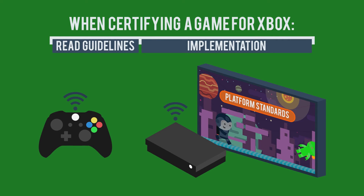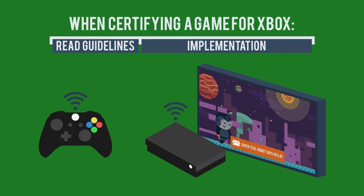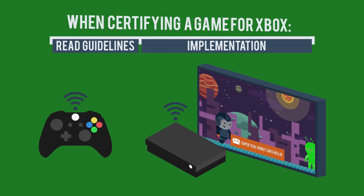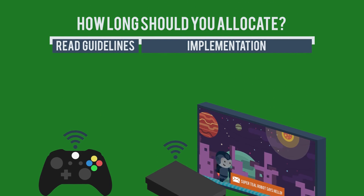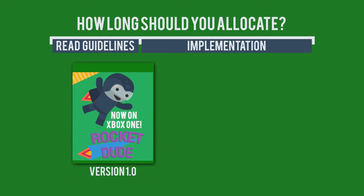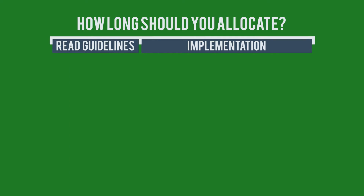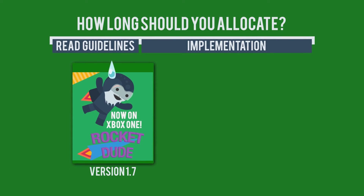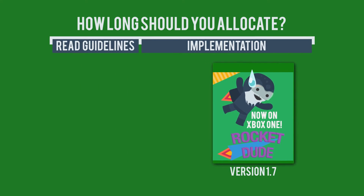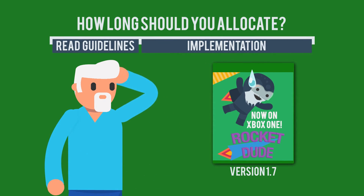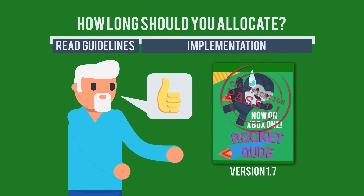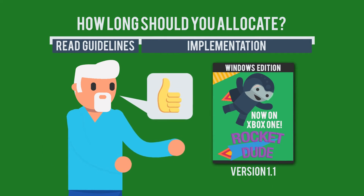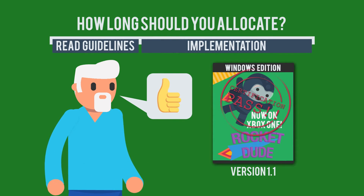You will also need to support platform standards for front-end and pause menus, including making sure your game provides users with the same standardized usage messaging as other Xbox games. The timeline for certification depends on how done your final build is when you submit it. If you've thoroughly met all Xbox requirements, you could get a first-time pass in a few weeks. The timeline could be much longer if you have to resubmit builds. Talk with your representative at ID@Xbox for the latest timeline estimates. For Windows games, the certification process is much quicker, with less stringent requirements around bugs and user notifications.